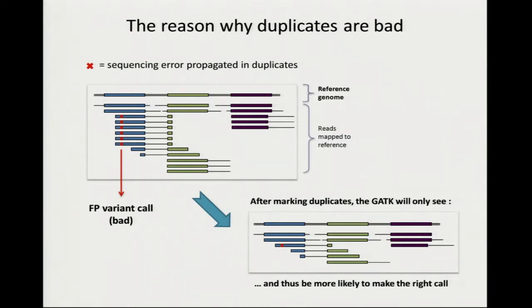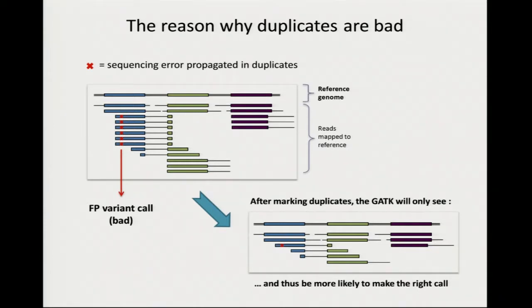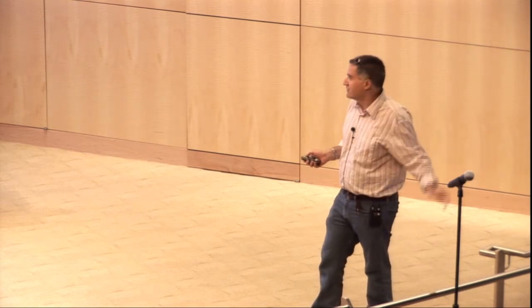The mark duplicates step looks for reads that appear to be copies of each other, chooses the best one, and marks the others as duplicates. By default it's not going to remove them from the BAM — you'll still have that data if you choose to do further analysis. But in a special flag, they'll be marked saying this is a duplicate, and then GATK by default will filter out those reads, seeing essentially one particular read which is the best description of the data.